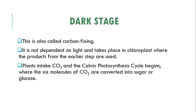In the dark stage, also called carbon fixation, the process is not dependent on light and takes place in the chloroplast. The products from the light stage are used here. The plant takes in carbon dioxide and the Calvin cycle begins, whereby six molecules of carbon dioxide are converted into sugar and glucose. That covers the dark stage of photosynthesis.